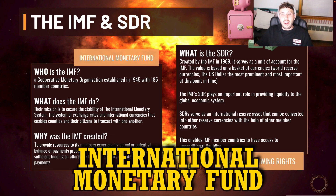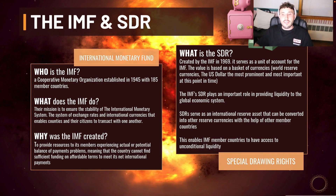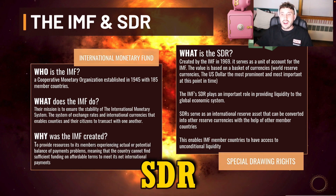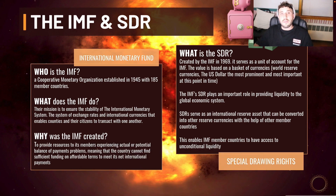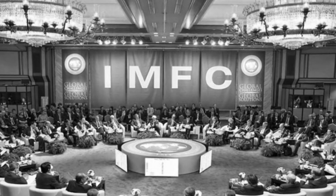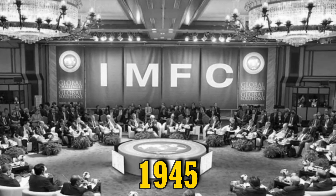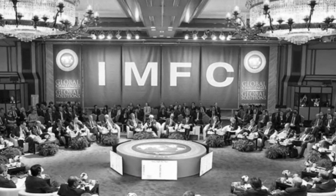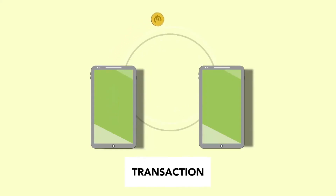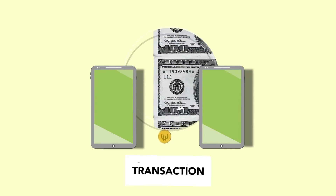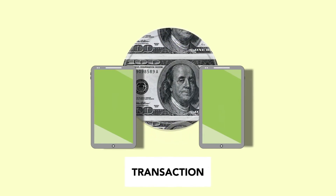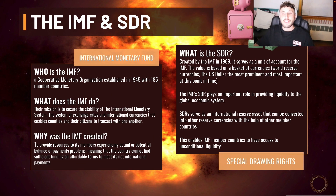So the key terms here are the International Monetary Fund and the Special Drawing Rights, the SDR. The International Monetary Fund, or IMF, is a cooperative monetary organization established in 1945 with 185 member countries. The IMF is a system of exchange rates and international currencies that enables countries and citizens to transact with one another.